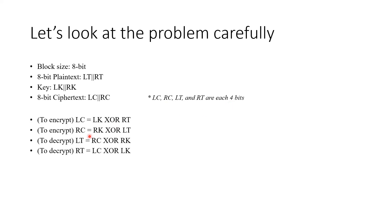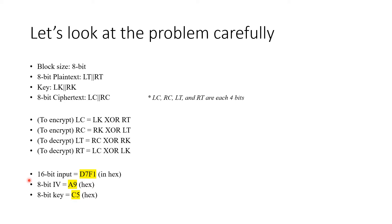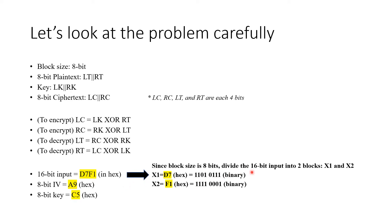In the problem we are given how to encrypt LC and RC and also how to decrypt LT and RT. This is pretty straightforward. Now let's look at what values are given to us. We are given a 16-bit input D7F1 in hexadecimal form. IV is A9 and the key is C5. Since the block size is 8-bit but our input is 16-bit, we will have to divide it into two blocks X1 and X2 as shown here.